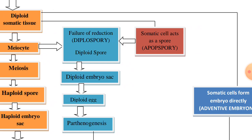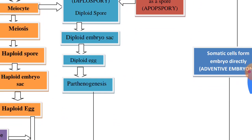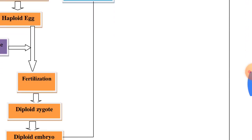In one more case, which is known as apospory, the meiocytes — that is, megaspore mother cells — may divide by meiotic division and sometimes there is formation of spore tetrads, but they are not functional. At the same time, the somatic cell — that is, cells of the nucellus or integument — forms the diploid embryo sac, in which there is formation of a diploid egg, and this diploid egg, by parthenogenesis, forms the diploid embryo.